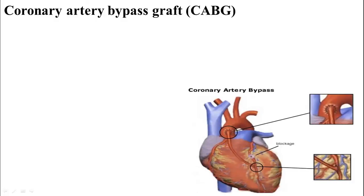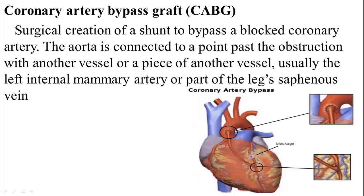Coronary artery bypass graft — 'graft' means a piece of tissue. This procedure is performed for patients with blockage of blood supply to the heart. The cardiologist typically utilizes the internal mammary artery or internal thoracic artery to connect the aorta with the coronary artery past the obstruction, to restore blood flow downstream past the blocked coronary artery.